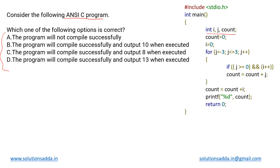i, j, and count — count and i are both initialized to zero, while the third variable j is used in the for loop. In this loop, j runs from minus three to three and is incremented by one in every step.